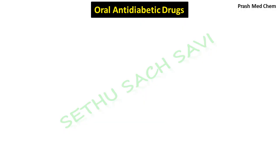In this video, I will discuss the classification of oral anti-diabetic drugs, which are also called anti-hyperglycemic drugs or simply hypoglycemic drugs. Oral anti-diabetic drugs are mainly indicated in diabetes mellitus where the blood glucose level exceeds the normal physiological range.